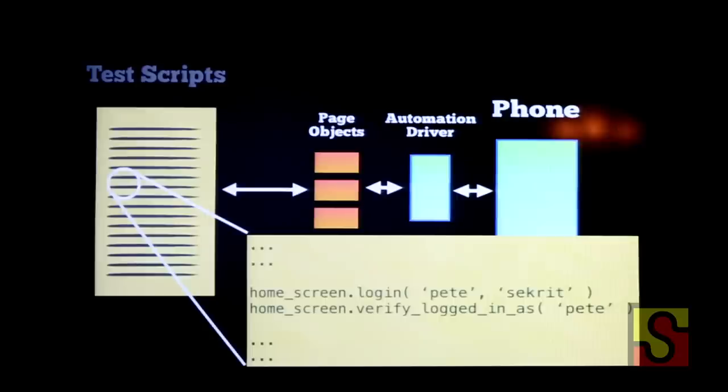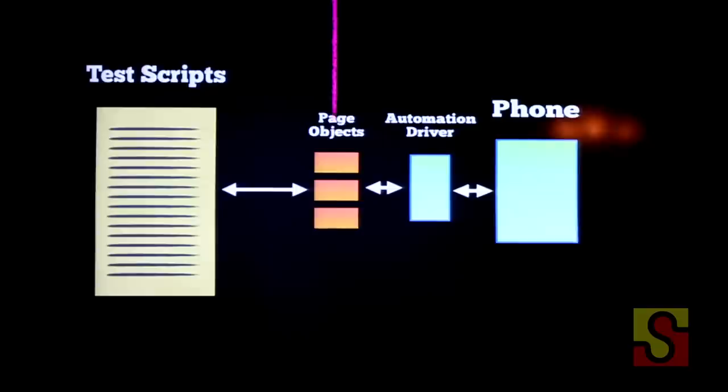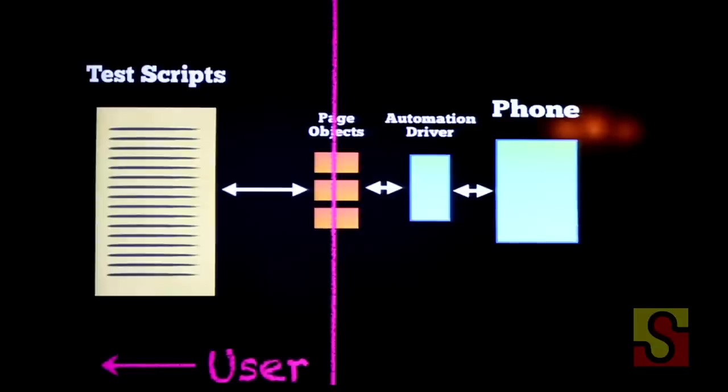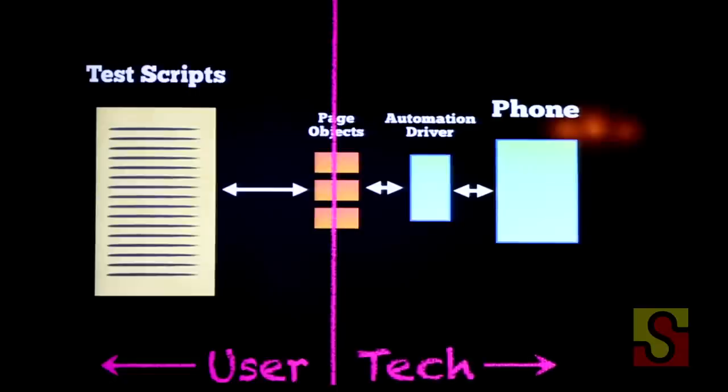These testing scripts are written in a language that you could almost show to a user of your application and they would understand — this is the domain language of your application. It's not talking about testing. I see the domain language of my application. These page objects are acting as a kind of abstraction layer. The stuff on the left-hand side is the user-focused stuff — the concepts inside your application — like logging in, whether you're on the right screen, domain concepts. If you've got a transit app, there'd be ideas like checking for the next bus.